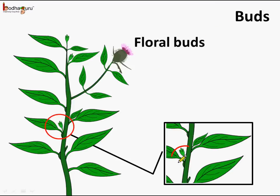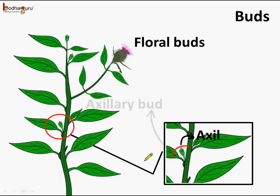Here is the bud which is present in the axil of the leaf and the stem. So this is the axil, and it is present at the axil of leaf and stem. Hence, this bud is called the axillary bud.